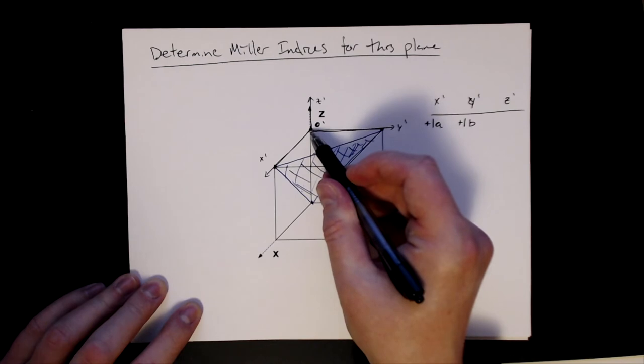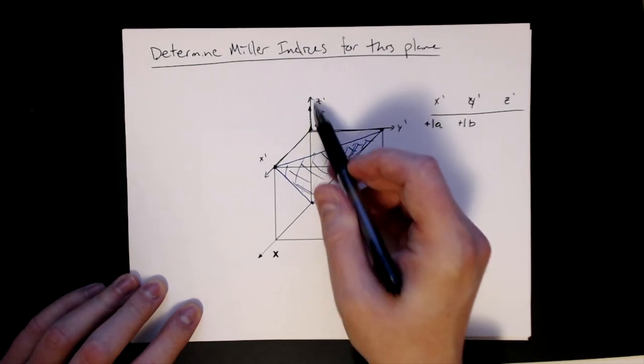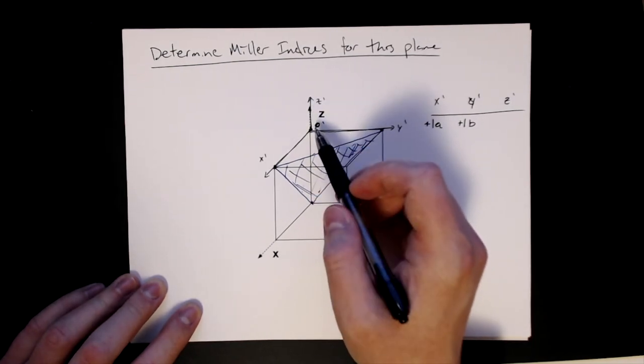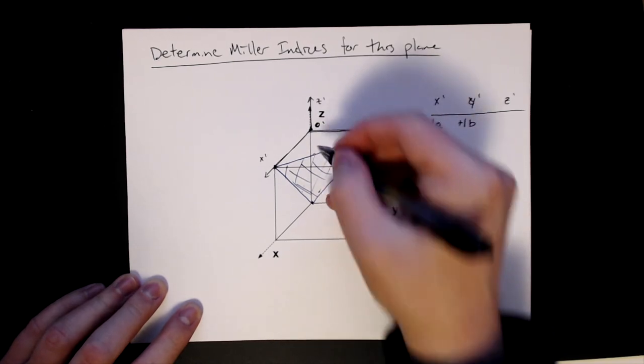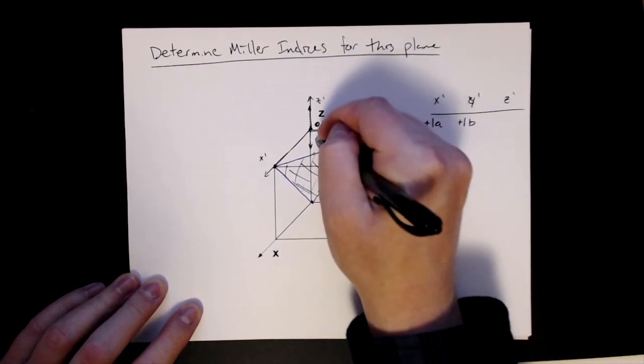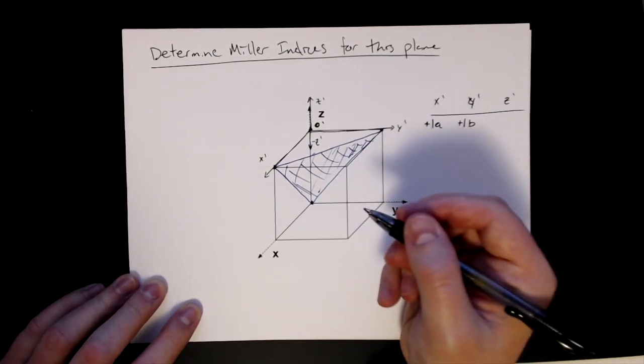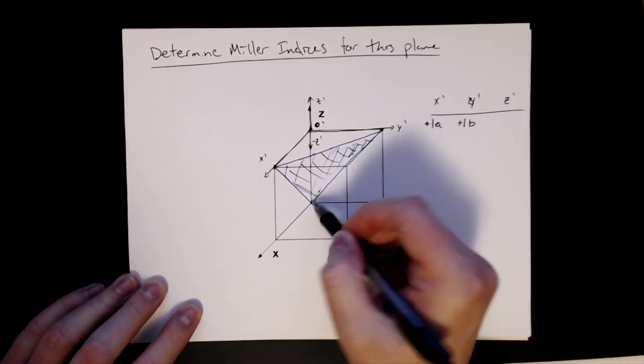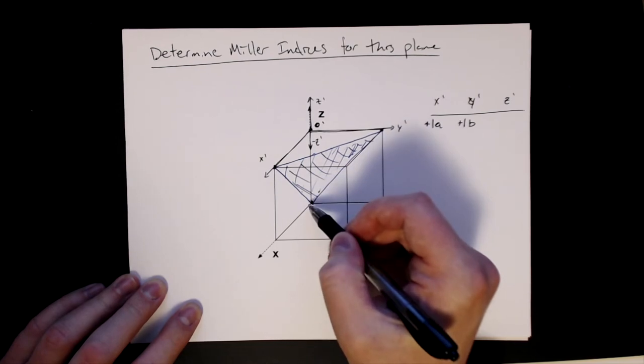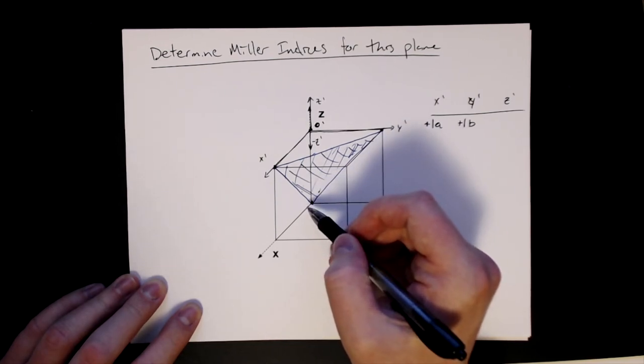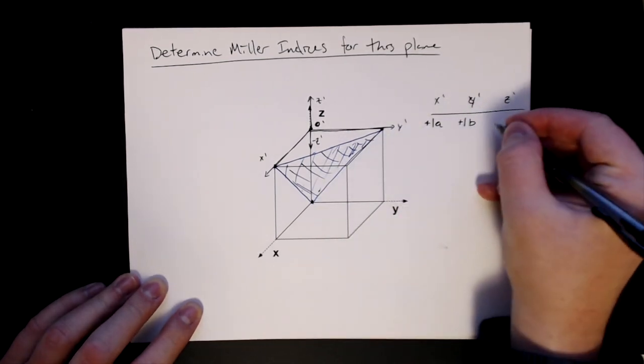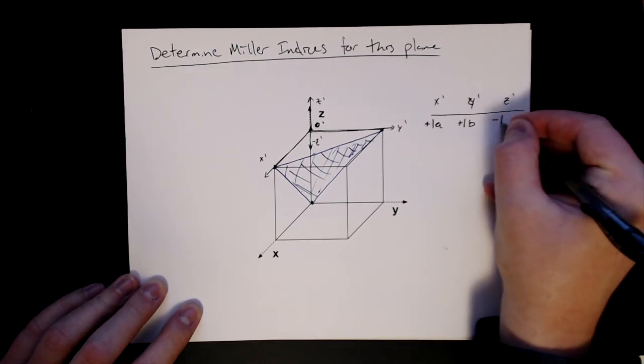And finally, the z axis, it's not crossing the positive z axis. But it is, however, if you plot down here, this would be my negative z prime axis. And it intercepts down here at this point, which is, again, one length of that axis edge, which is c. So in this case, it's going to be negative 1c. So these are my intercepts.